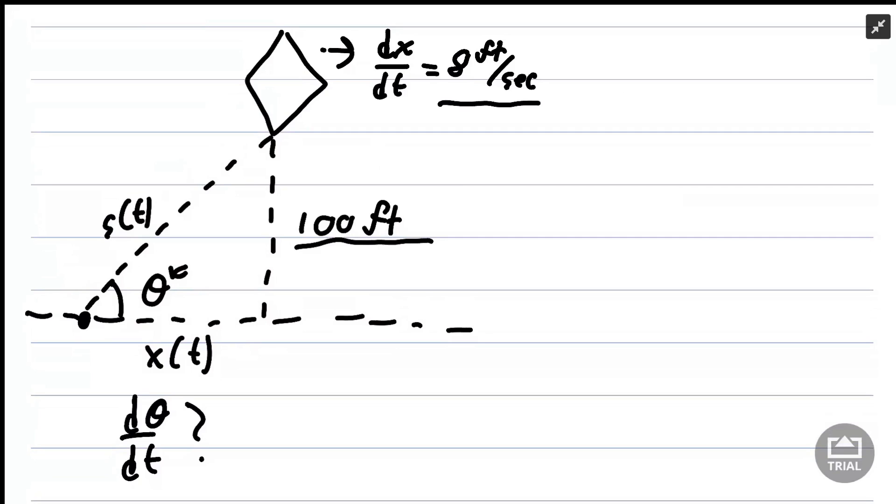When we're working on related rates problems, we want to associate variables that we care about with facts from the design of the problem. Here we have a triangle, so if we want to relate theta to things that we know, we might start by using our trig identities.